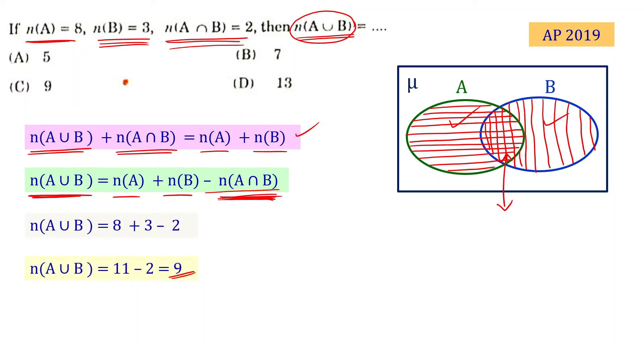The number of elements of A∪B is 9. Choice C is the correct answer.